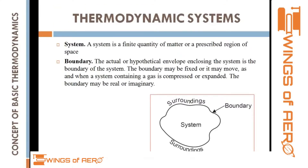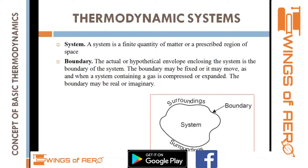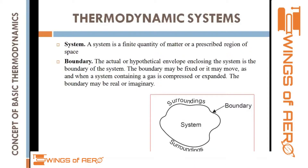In thermodynamic systems, we have three components: system, boundary, and surrounding. A system is a quantity of matter or a prescribed region of space where a process occurs. When we focus on a particular process, the imaginary line that bounds it is called the boundary, and everything beyond the boundary is called the surrounding.